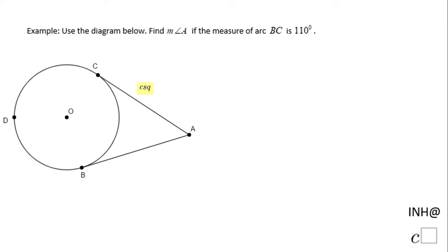Welcome back to Math Help at C Square. In this example, we have a circle and we need to find the measure of angle A if the measure of arc BC is 110 degrees.